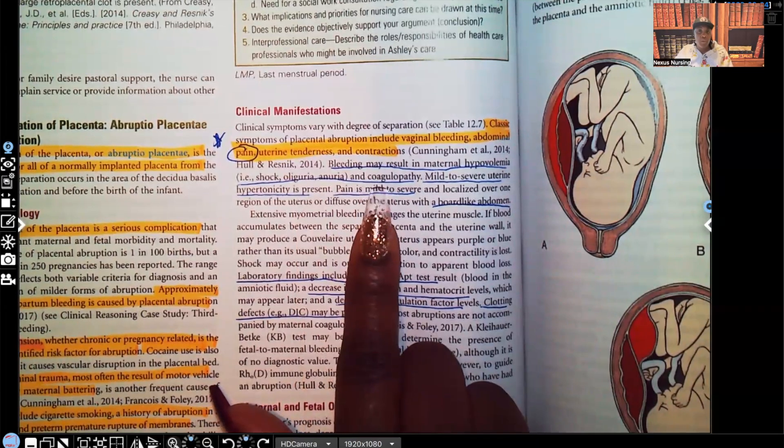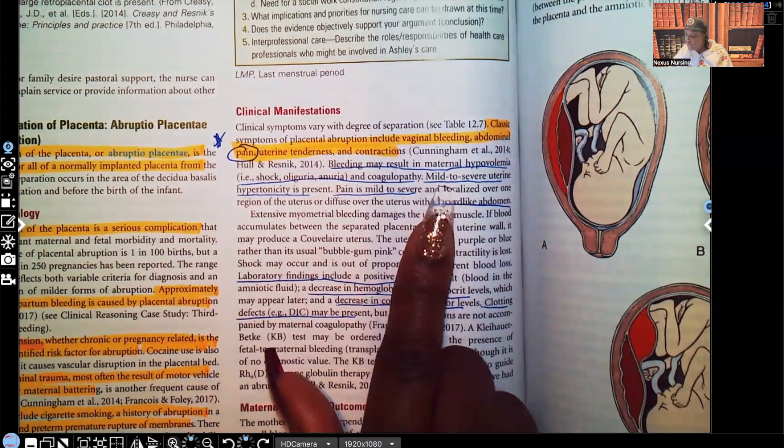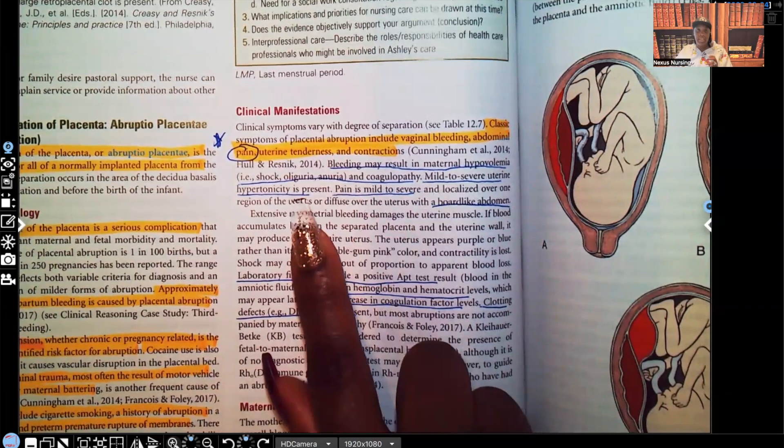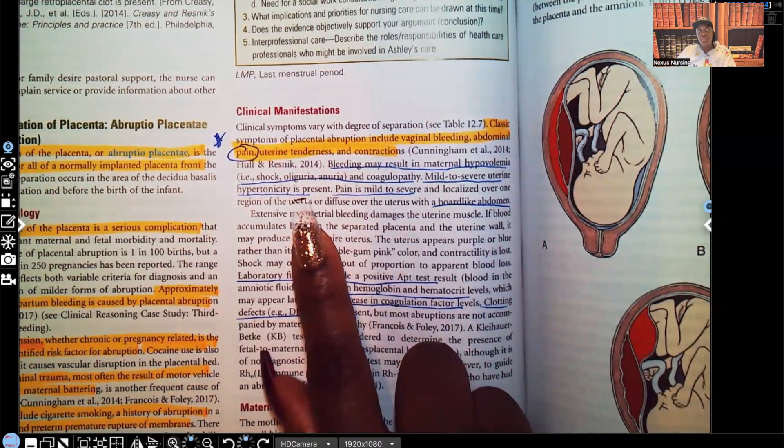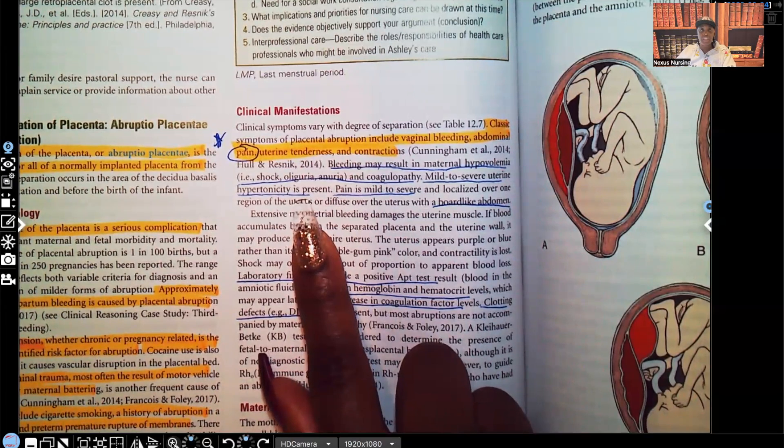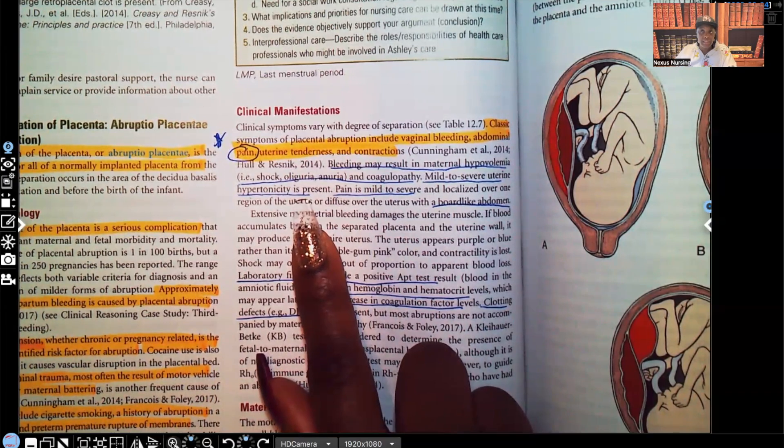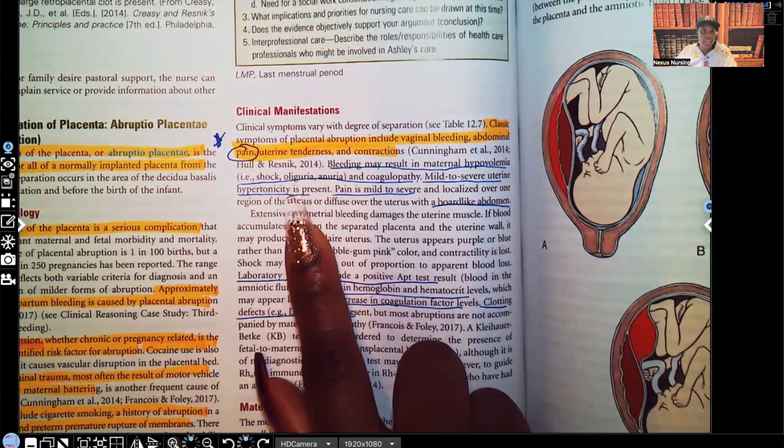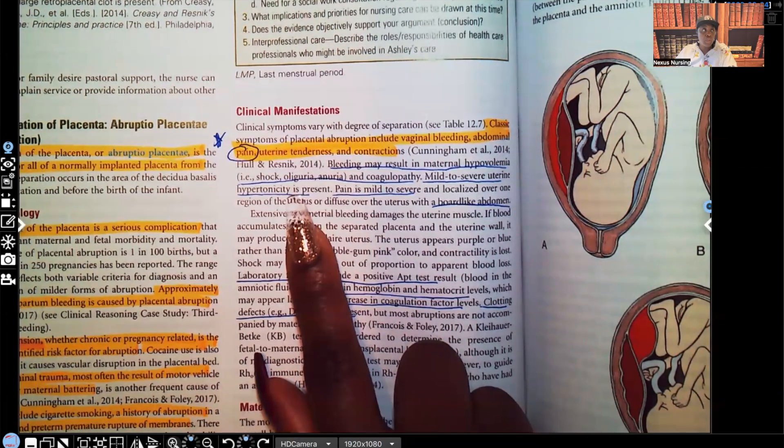Coagulopathy. They're bleeding all over the place. Mild to severe uterine hypertonicity is present. Your body's meant to survive no matter what. So mom's bleeding out, and you're going to see those contractions, the tonicity increase, trying to stop the bleeding. It's going to try, but it's going to be unsuccessful. But you will see mild to moderate hypertonicity because it's trying to compensate.